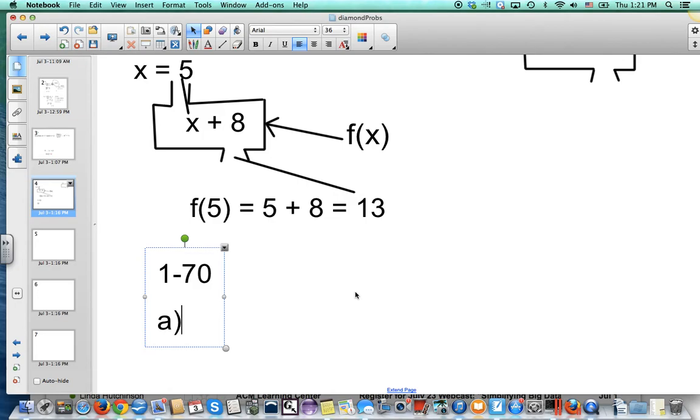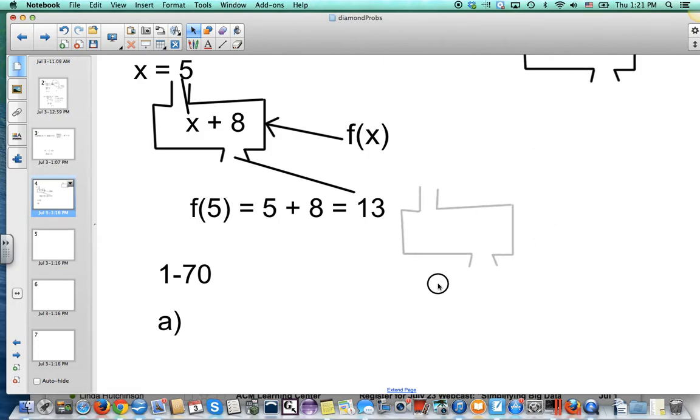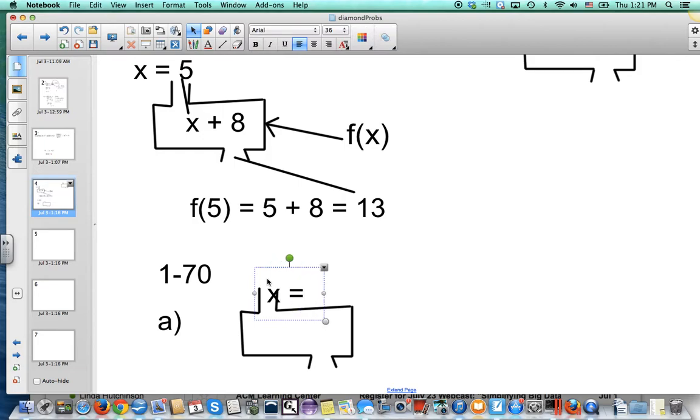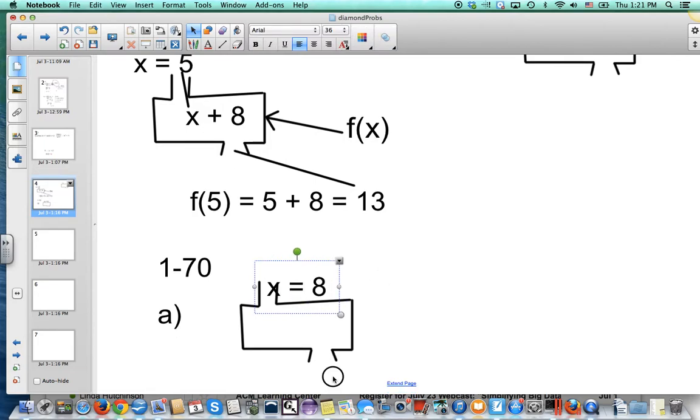For 1-70 part A, they're telling you to put in an 8, and they're wondering what comes out when you put an 8 in. Let's see what's happening in A.